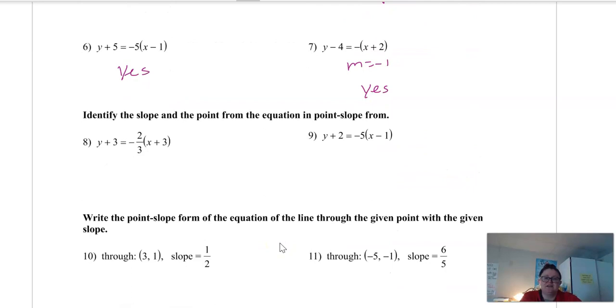So let's do a couple. It says, identify the slope. Oh, sorry. We're going to look at these equations and find the point and the slope from the equation. So here, we've got y plus 3. That means that y is going to be negative 3, because it's always the opposite of what it says here. M is going to be negative 2 over 3. And then x is going to be negative 3, because it says plus 3. So it's going to be the point, negative 3, negative 3, and our slope is negative 2 thirds.